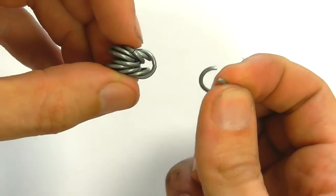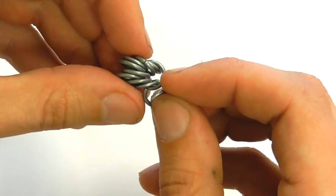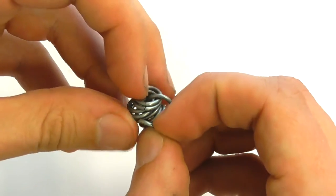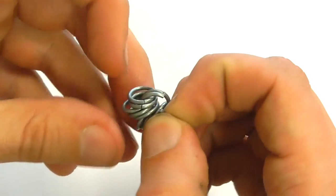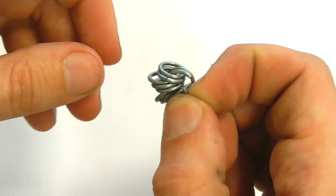Now let's take the second open ring and put it through 8 rings. Like that. Let's close it.